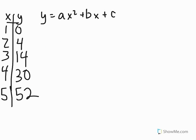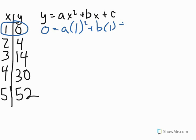In order to create the three equations, we're going to use the standard form y equals ax squared plus bx plus c and use points from our table. Starting with the very first point, (1, 0), I plug 0 in for y and 1 in for x. So I get 0 equals a times 1 squared plus b times 1 plus c, which simplifies to 0 equals a plus b plus c.